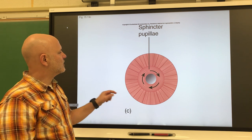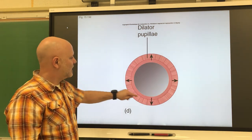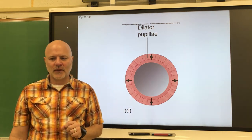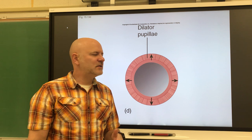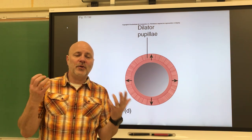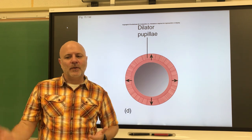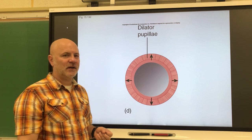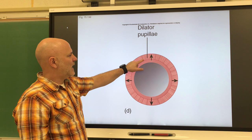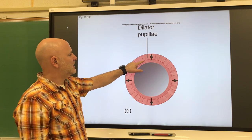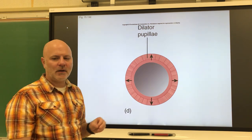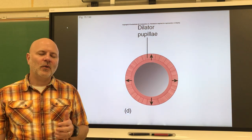The other set of muscles is called the radial set — the outer muscles. These are straight muscles, and when they contract the pupil dilates. This typically occurs when we move into a darkened room, allowing more light in so we can see more. This is controlled by the sympathetic division. When the radial set contracts, the circular set is relaxed, and vice versa.